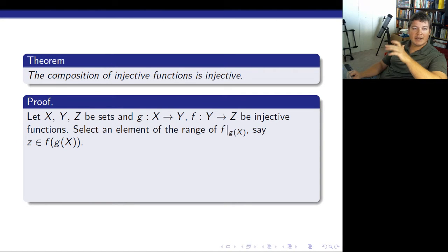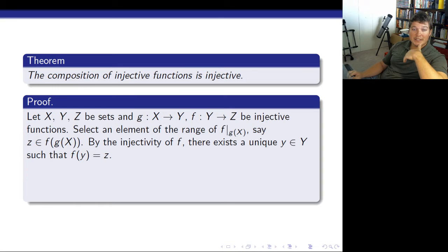Select an element in the range of f restricted to the image of g. Say, z is in f of g of x. So, that's the same thing. We're just saying we're looking at f restricted to g of x. Well, that's the same as taking the image of g of x under f. So, we pick a point in there. That's our z. By the injectivity of f, there exists a unique y in y, such that f of y equals z.